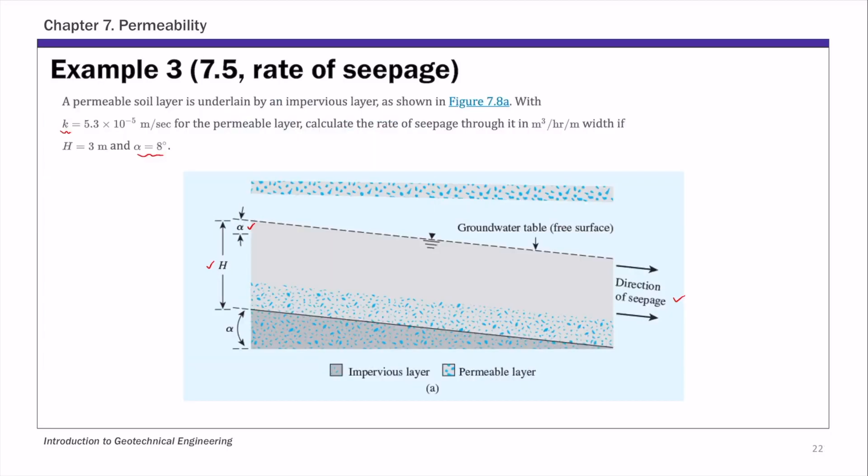And to calculate the rate of seepage, we need to use Darcy's law. If you recall, Darcy's law: q equals k i A, and i is the hydraulic gradient. So it's k times head loss over distance. Let's use delta H for head loss and the corresponding distance water travels is L times cross-sectional area. So that's the equation we're going to use to estimate rate of seepage. The key here is to find what is the head loss, what is the distance, and what is the cross-sectional area.